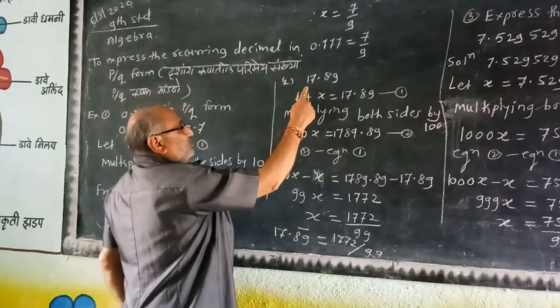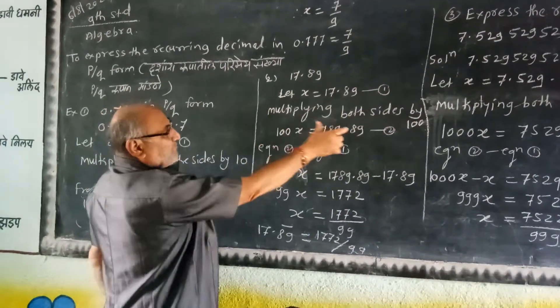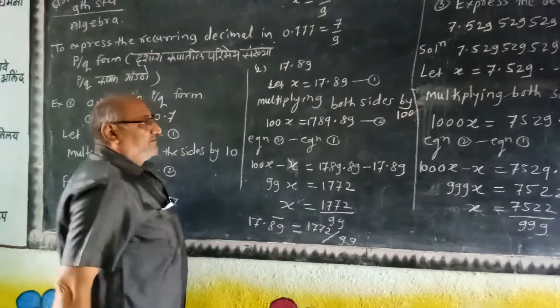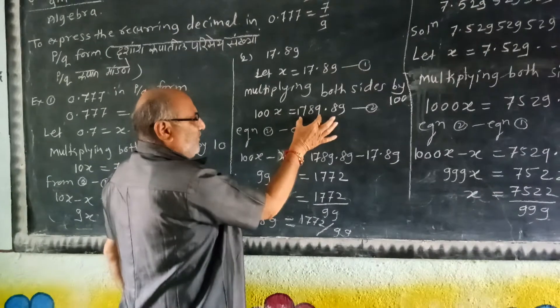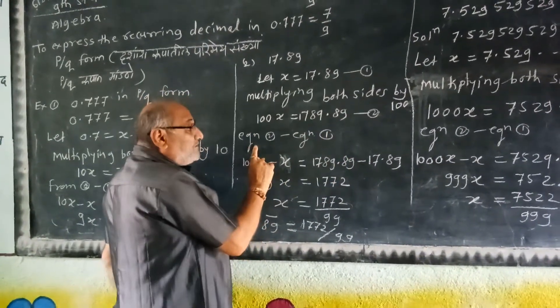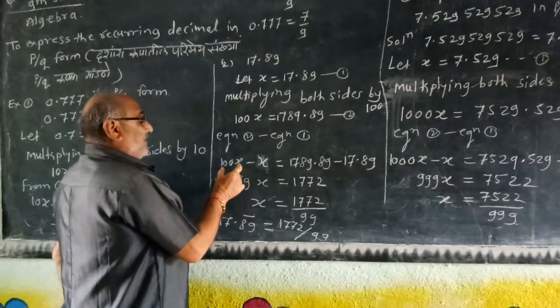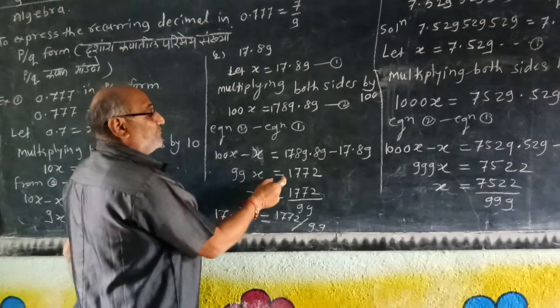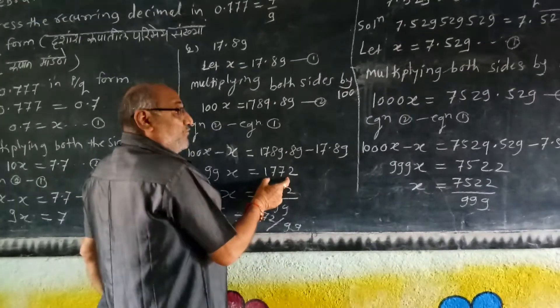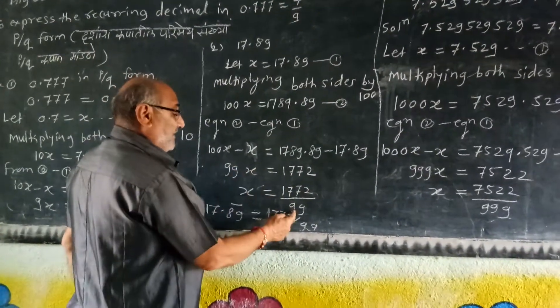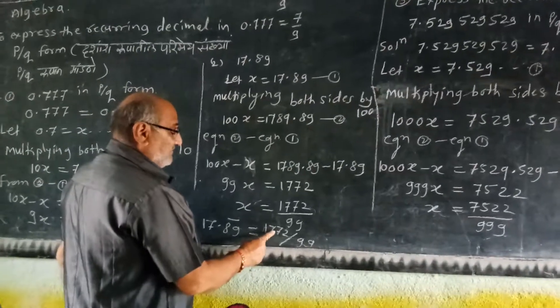Equation 2 minus equation 1: 100x minus x is equal to 1789.89̄ minus 17.89̄. 99x equals 1772. Therefore, 17.89̄ is equal to 1772 divided by 99 in p/q form.